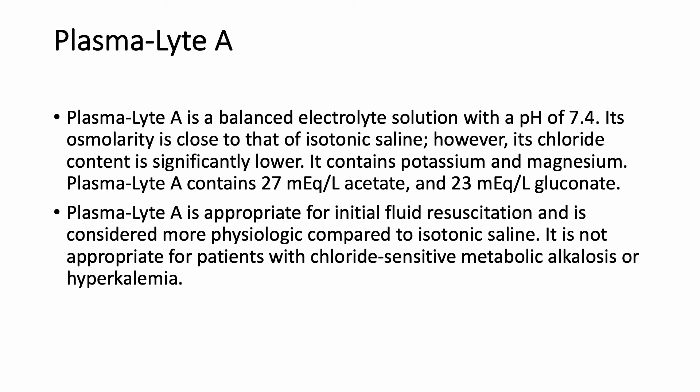Plasma-Lyte A is an example of a balanced electrolyte solution. Its pH is 7.4, close to physiologic, and its osmolarity is close to that of isotonic saline, but with significantly lower chloride content. In addition to sodium and chloride, it contains potassium, magnesium, acetate (27 mEq/L), and gluconate. Like 0.9 saline and LR, Plasma-Lyte A is appropriate for initial fluid resuscitation, and is touted as more physiologic, though it is more expensive. However, for chloride-sensitive metabolic alkalosis, stick with 0.9 saline; and for hyperkalemia, avoid both LR and Plasma-Lyte A since they contain potassium.